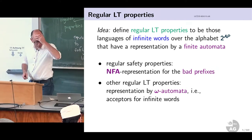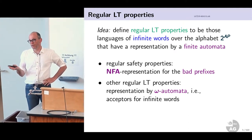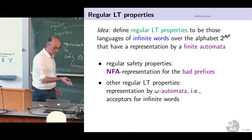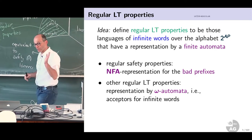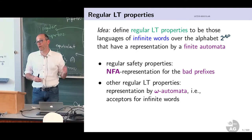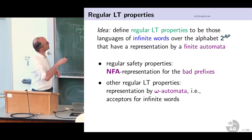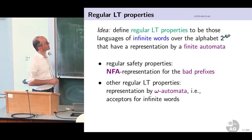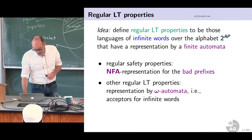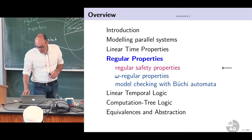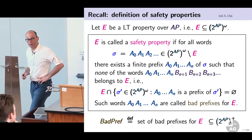So what is a regular property? A regular property is a language of infinite words — not surprising, since every LT property is a set of infinite words over the alphabet 2^AP. The key point is that it has a representation by a finite automaton — a standard finite state automaton that you are all hopefully familiar with. I will do a short recap to introduce my notation.